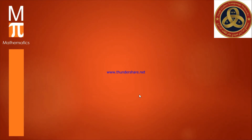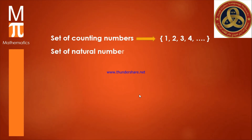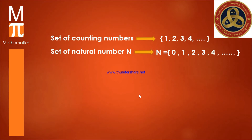The first set is called the set of counting numbers. The set of counting numbers are all the whole positive numbers, which means we start by one, two, three, four, and so on. After discovering zero, we have a new set called the set of natural numbers. The set of natural numbers is N, and N equals {0, 1, 2, 3, 4}, which means zero is added to the counting numbers.